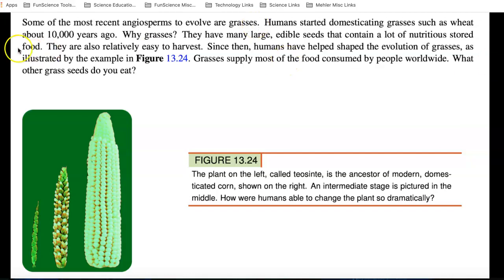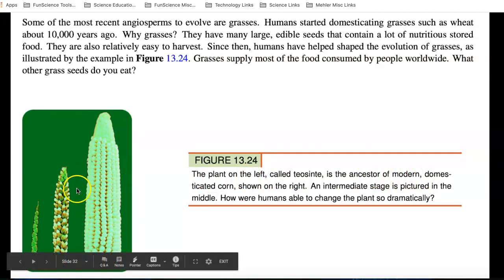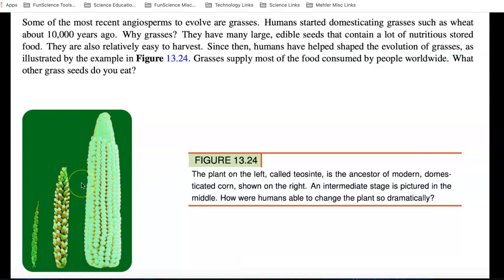Some of the most recent angiosperm to evolve are grasses. Humans started domesticating grasses such as wheat about 10,000 years ago. So, human beings started to domesticate wheat just as they started to domesticate animals as well. The plant on the left is called teosinte, and it's the ancestor of modern corn, which is shown on the right. We know about this from the fossil evidence of plants. Plants leave lots of fossils, especially the more recent ones. So, people around the world rely on domestic plants like rice, like wheat, like corn. Those are three of the big ones.